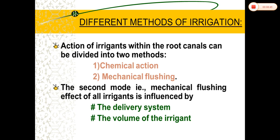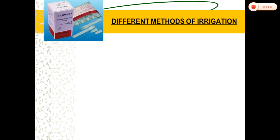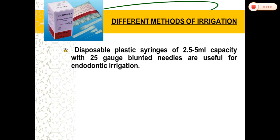Coming to the different methods of irrigation: we have many methods which come under chemical action and mechanical flushing. Mechanical flushing is mainly influenced by the delivery system and the volume of the irrigant used.